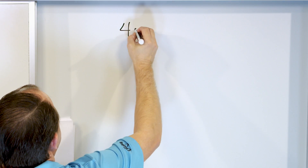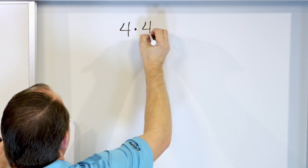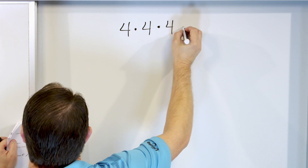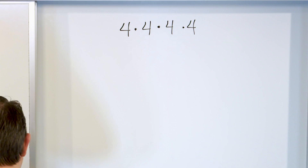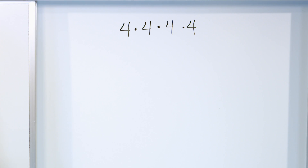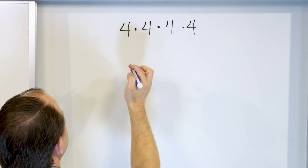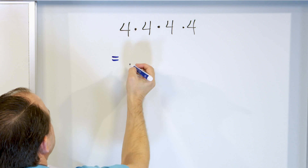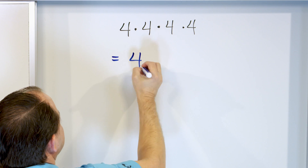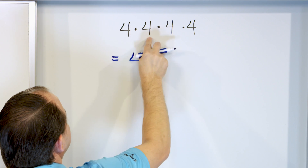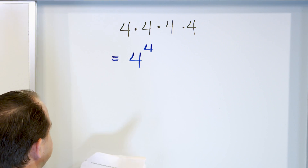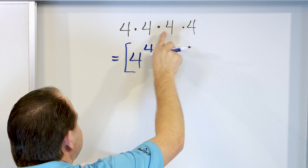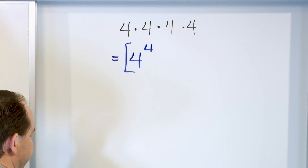Let's take a look at four times four times four times four. This is a product of factors — let's write it as an expression with an exponent. We're multiplying fours, so the base is four, and we have one, two, three, four of them. So it's going to be four to the power of four.